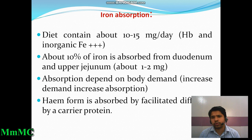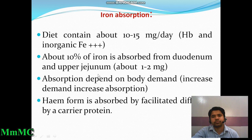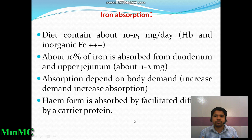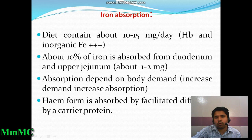Regarding iron absorption: the diet contains about 10 to 15 milligrams per day in the form of hemoglobin and inorganic ferric iron. About 10 percent of iron is absorbed from the duodenum and upper jejunum, which means about 1 to 2 milligrams. Absorption depends on body demand — increased demand leads to increased absorption from the intestine.